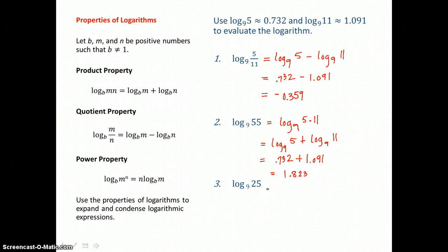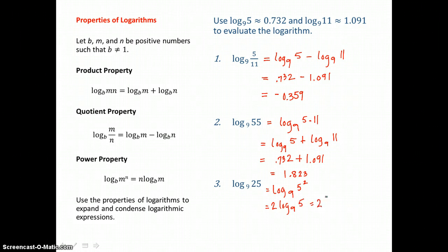In problem 3, we can write 25 as 5 squared. So log base 9 of 25 is log base 9 of 5 squared, and I can use the power property to expand. That exponent on 5 can be brought out in front of the log as a factor. So I can write this as 2 times log base 9 of 5, and substitute in that value: 2 times 0.732. When I multiply, I get 1.464 — the power you raise 9 to to get 25.